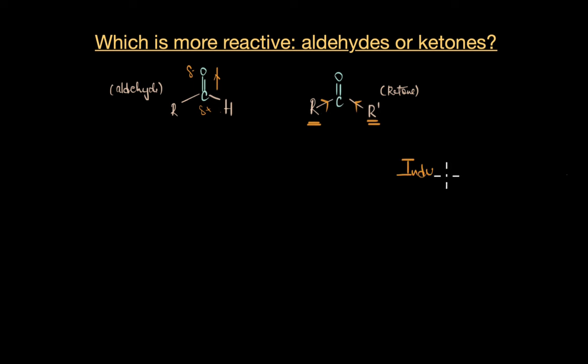As we already know, inductive effect is electron donation or withdrawal through sigma bonds due to the difference in electronegativity between atoms. Now alkyl groups are generally electron donating via plus I effect, and this is because the carbon atom of the alkyl groups is less electronegative than many other atoms like oxygen or fluorine.